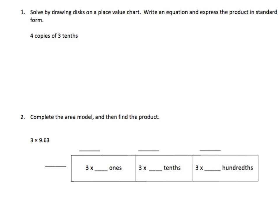So we'll start with the place value chart. I'm going to need my ones and tenths places. And the question tells us that we need to make 4 copies of 3 tenths. To show 3 tenths, I would put 3 disks in my tenths place.